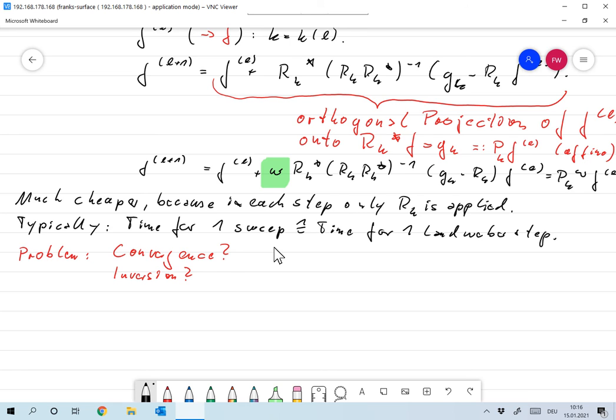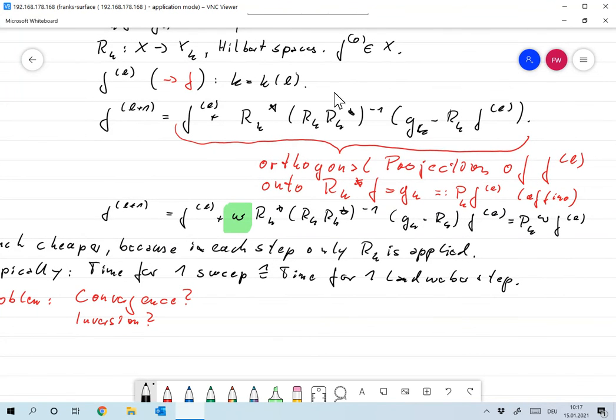Now the problem of this, of course, is up to now everything is just hope, right? I mean, there's no convergence theorem at this point. This is a good idea, but the first question is, okay, does that at all converge? We will show that it does, at least for some special cases. And there's another thing: I quickly went over this inversion over here. So R_k R_k star to the minus one, if these are matrices we might have to invert here, and we'll have to do something about that. And that's also something we're going to do.